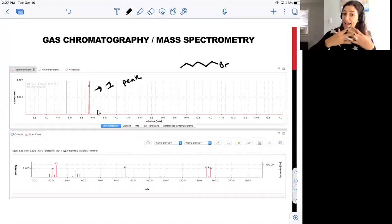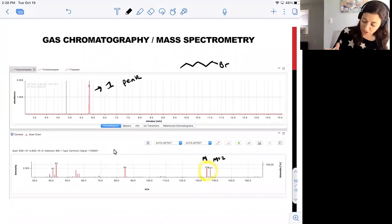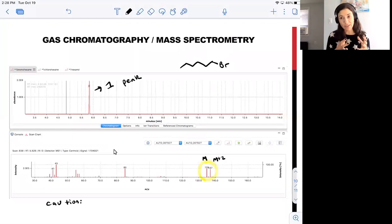In addition to being able to say at five and a half to six minutes I have material coming out of the column, if I double click on the peak in the software, I can actually pull up the mass spectrometry data that was collected by the mass detector for all of the molecules that exited the column during that time point. What I can see, if I bring my eye far to the right here, is what I like to call the twin peaks at 135 and 137. You'll recall that when we have an M and an M plus 2 that are equal in height, it typically indicates the presence of a bromine atom.